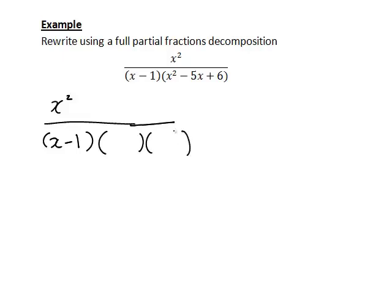And the answer is yes we can. x squared is x times x, and 6 can be written as negative 3 times negative 2. Doing that will give the required middle term of negative 5x. So how do we rewrite this in the form of partial fractions?